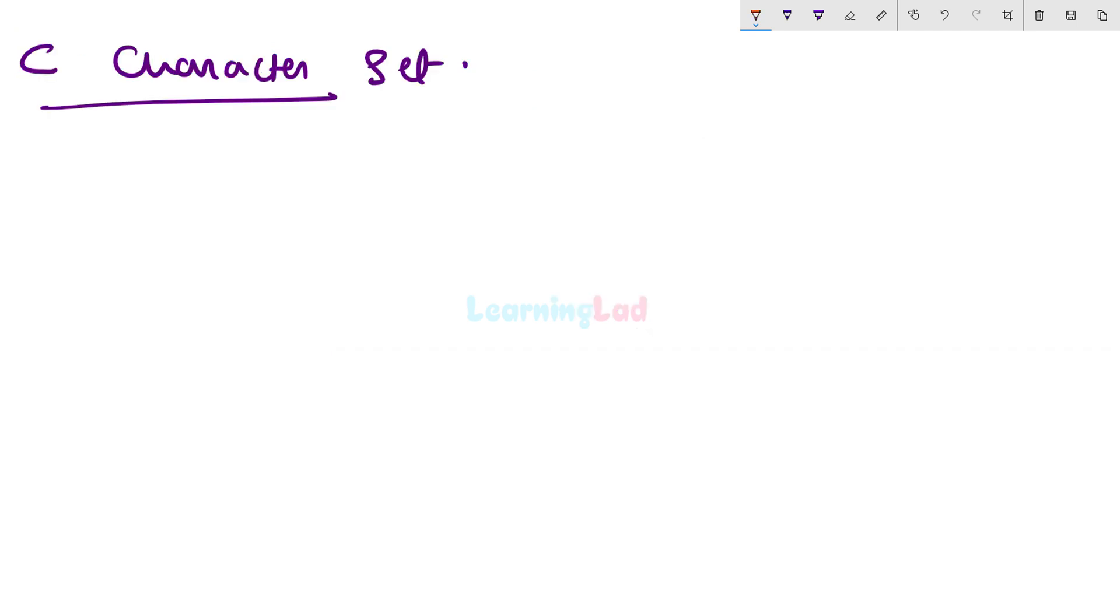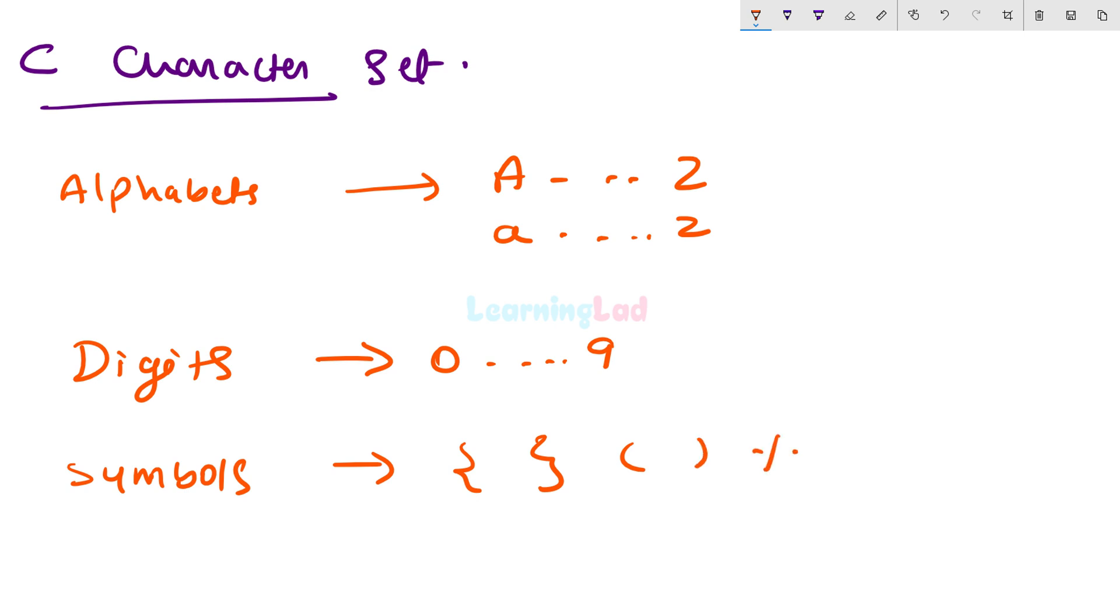A character denotes any alphabet, digit or a special symbol used to represent information. In C programming language we can use the English alphabets. We can use both uppercase and lowercase alphabets. We can have the characters from capital A to capital Z and also from lowercase a to lowercase z. And also we can use the digits, so we can have the digits from 0 to 9, and we have some special symbols such as curly braces and then parentheses, percentage symbol, plus, minus, multiplication, division, semicolon etc. And we have some other special symbols are also available.